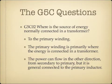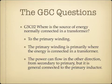Where is the source of energy normally connected in a transformer? The source of energy in a transformer is normally connected to the primary winding. Primary winding, primary source of energy — that's usually where it's connected. There are instances where the secondary winding might be where the energy source is connected, but usually it's connected to the primary winding. The primary winding is where the energy is normally connected to a transformer.